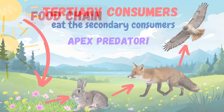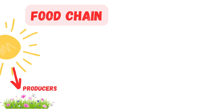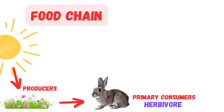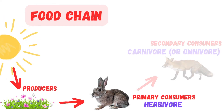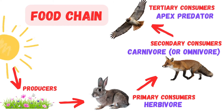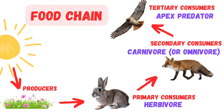So, in a simple food chain, energy flows from the sun to the producers, then to the primary consumers, the herbivores, and up to the secondary and tertiary consumers, the carnivores or omnivores.